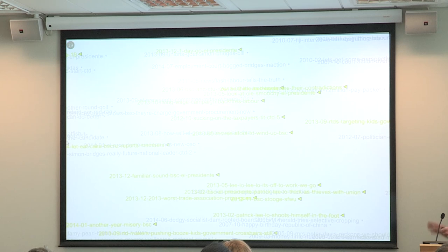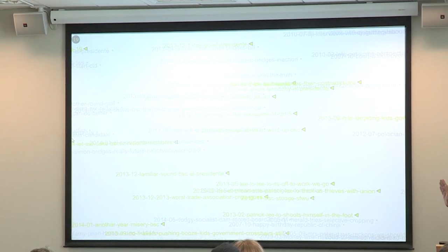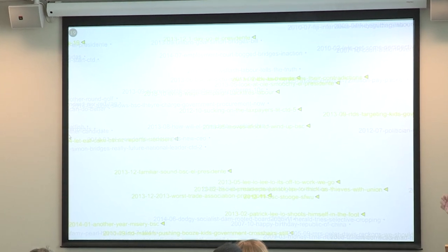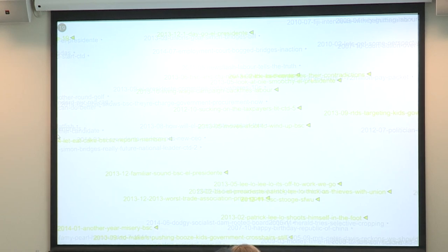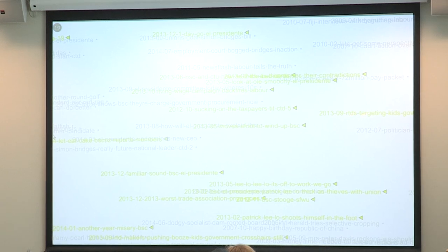This is with labels on them. Now some of them, like that Fiji one — that is something Cameron Slater cares about, he writes about Fiji, and that is almost certainly him. Nobody else cares so much. And this one — 2005 — that is before this thing started going on. But 'stacking on the taxpayers' and 'R2Ds targeting kids,' that's the kind of thing that Cameron Slater wrote about.